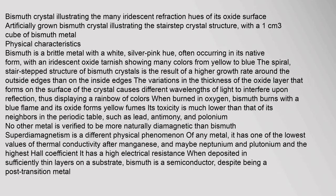Bismuth crystals illustrate the many iridescent refraction hues of their oxide surface. The artificially grown bismuth crystal illustrates the stair-step crystal structure. Bismuth is a brittle metal with a white, silver-pink hue, often occurring in its native form with an iridescent oxide tarnish showing many colours from yellow to blue. The spiral, stair-stepped structure of bismuth crystals results from a higher growth rate around the outside edges than on the inside edges. Variations in the thickness of the oxide layer cause different wavelengths of light to interfere upon reflection.